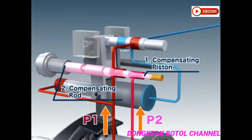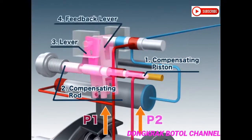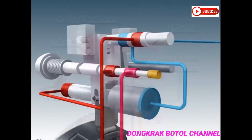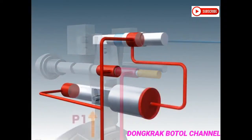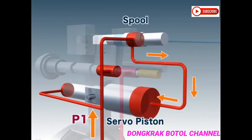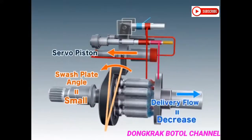As the compensating rod is pushed, the lever rotates, moving the feedback lever, which in turn moves the spool. The delivery pressure of P1 passes through the spool and pushes against the larger side of the servo piston. As the servo piston moves, the inclination of the swash plate decreases, reducing the delivery flow.